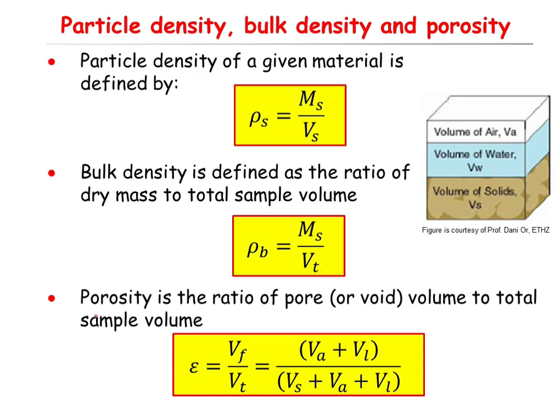Another definition is porosity, defined as the ratio of the pore or void volume — the volume of the void space — divided by the total volume. Porosity equals Vf, standing for the volume of the fluid, which includes the volume of the air phase plus the volume of the liquid phase, divided by the total volume Vt, where Vt equals Vs plus Va plus Vl.